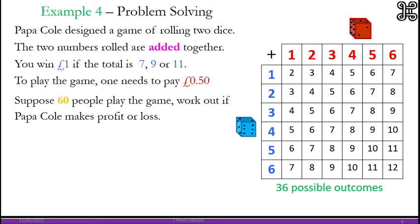Take your time to read the question. Papa Cole designed a game of rolling 2 dice. The 2 numbers rolled are added together. You win a pound if the total is 7, 9 or 11. To play the game you need to pay 50p. Suppose 60 people play the game. Work out if Papa Cole makes a profit or a loss.